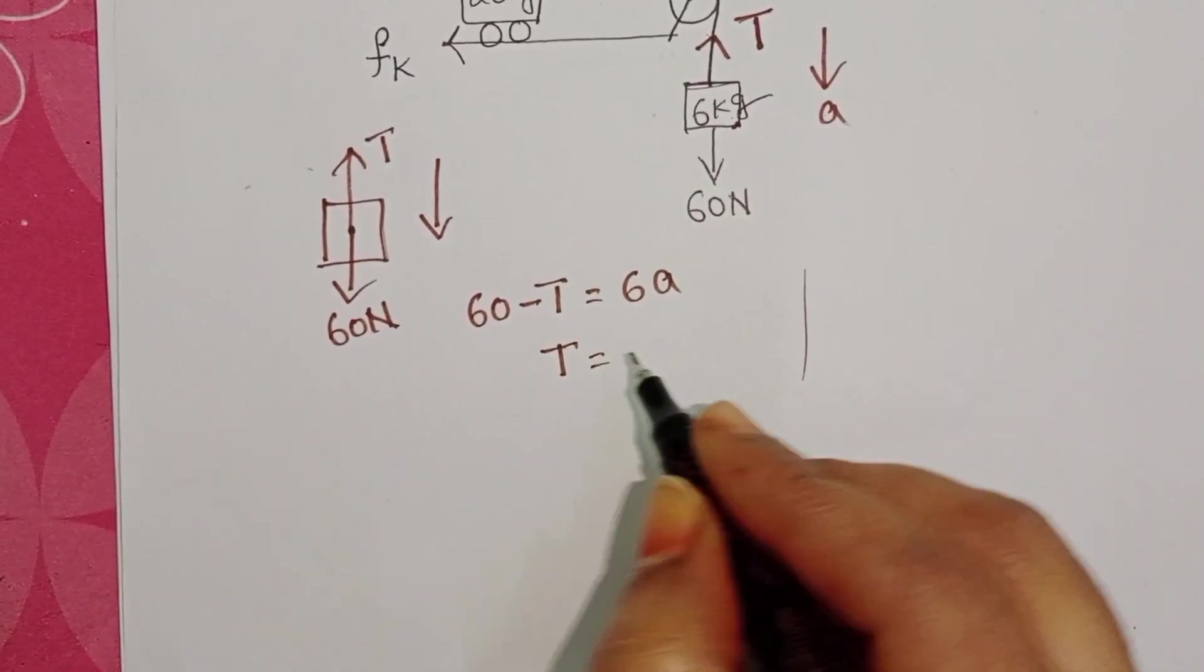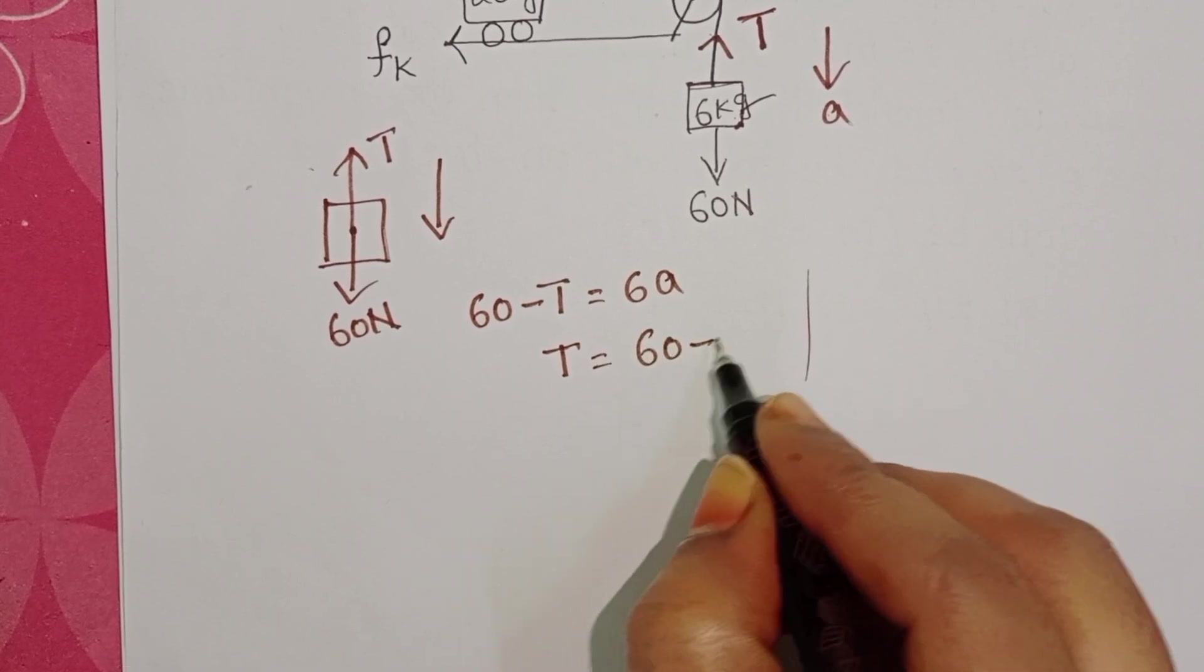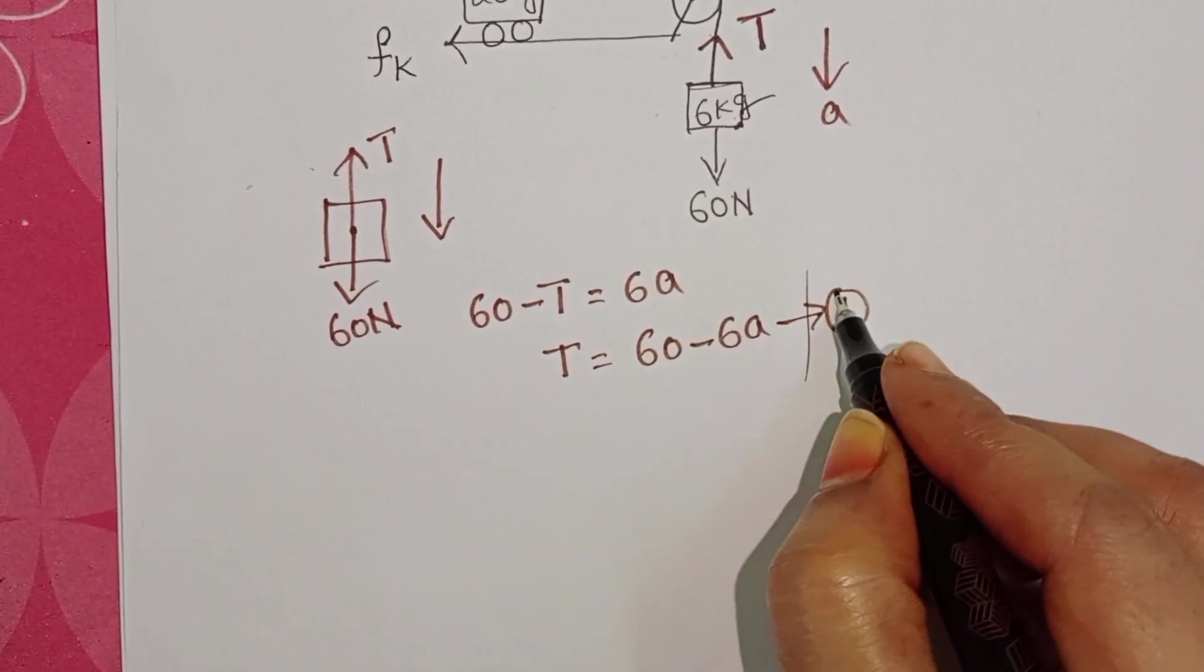From this, T equals 60 minus 6A. Take this as equation 1. And now the free body diagram of the trolley.